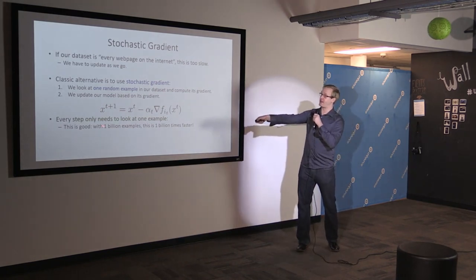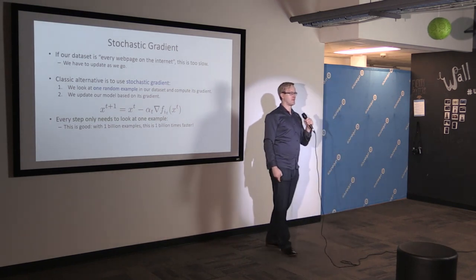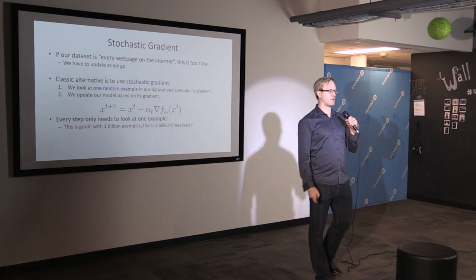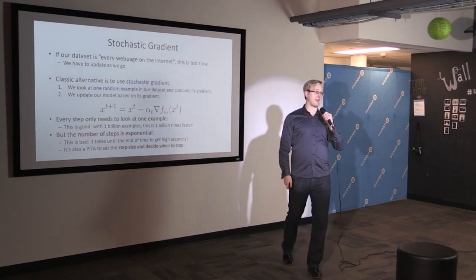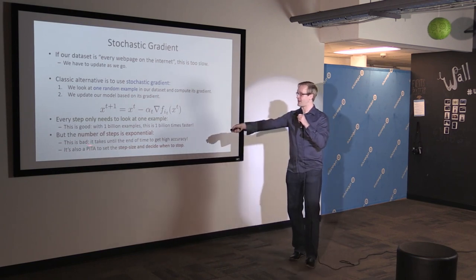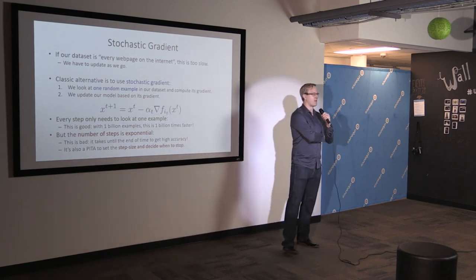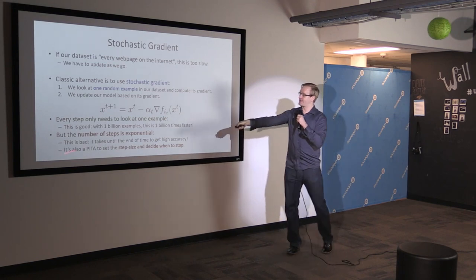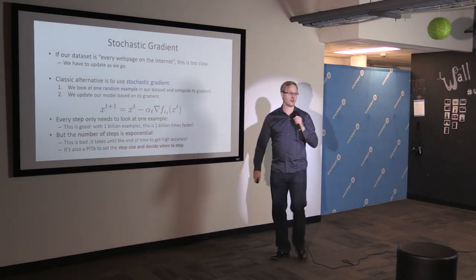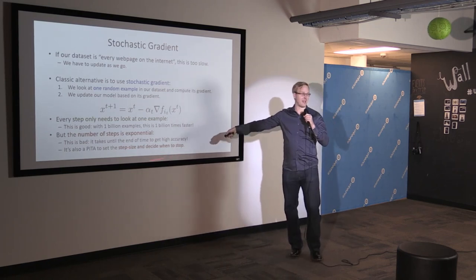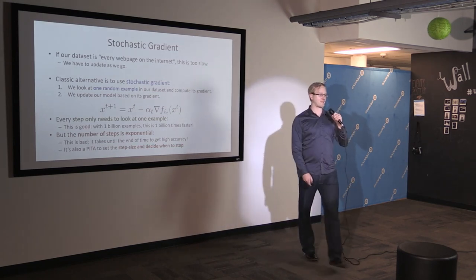Every step only needs to look at one example, so if you have one billion data points, one step is one billion times faster. That's a speedup that's hard to ignore — not many times in computer science do you get to make something a billion times faster. But that doesn't come for free: the number of steps is actually exponential, which should make you uneasy. It could take until the end of time to get high accuracy. It's also a pain to set the step size and decide when to stop, especially those who played with neural networks in the 80s or 90s.